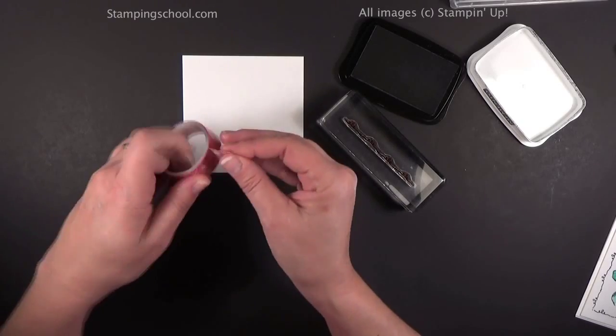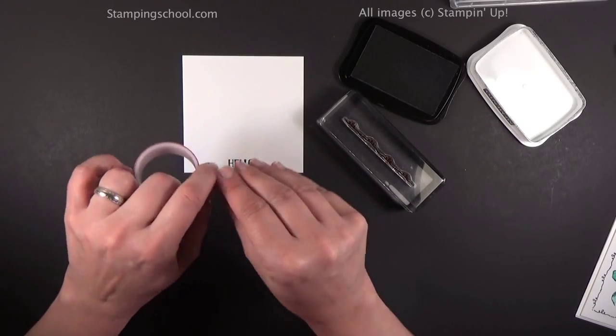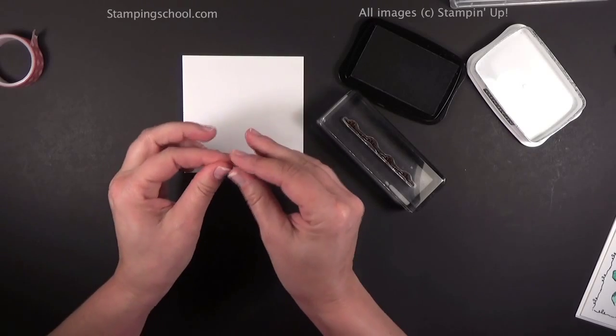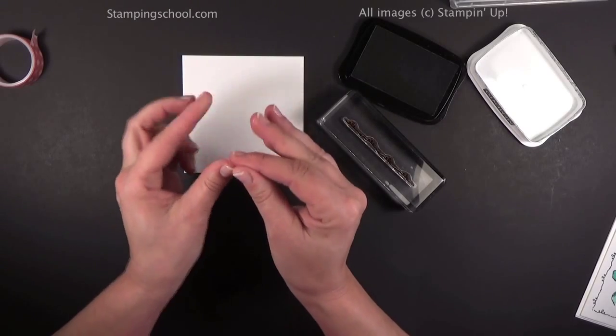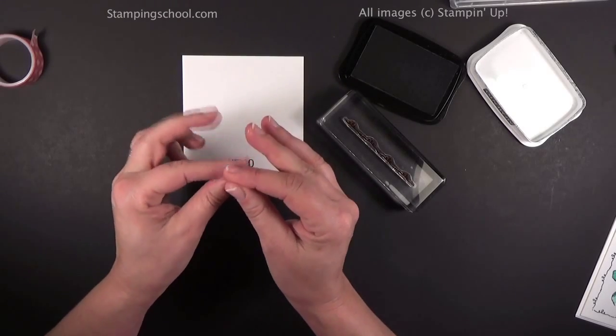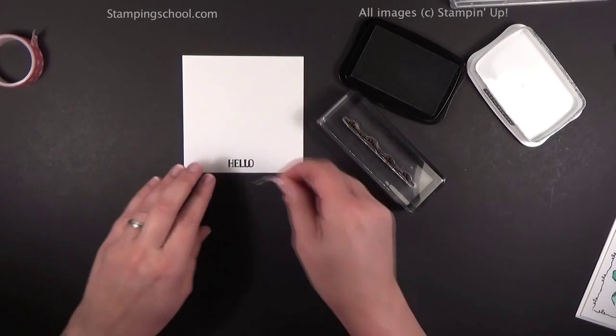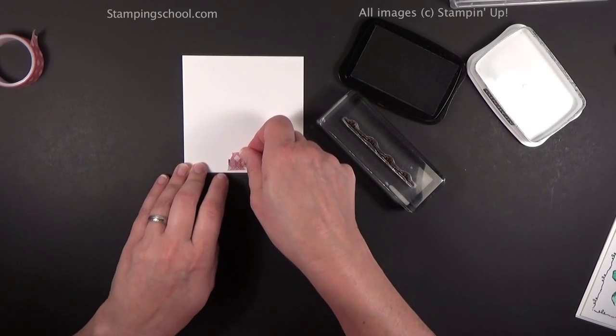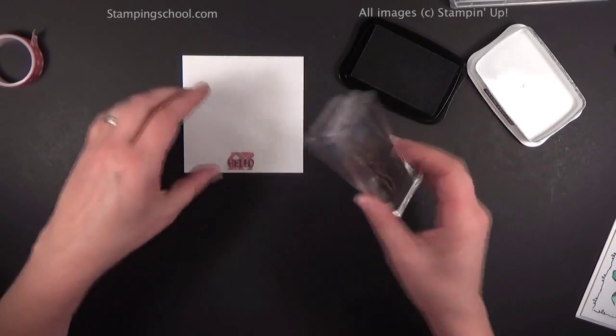Take a piece of washi tape—if you're like me, you hoard it and you've got lots of rolls of it. Just take a little piece and get some of the sticky off. You don't want it to be super sticky because we're going to cover up our greeting just like that, and then we're going to stamp.